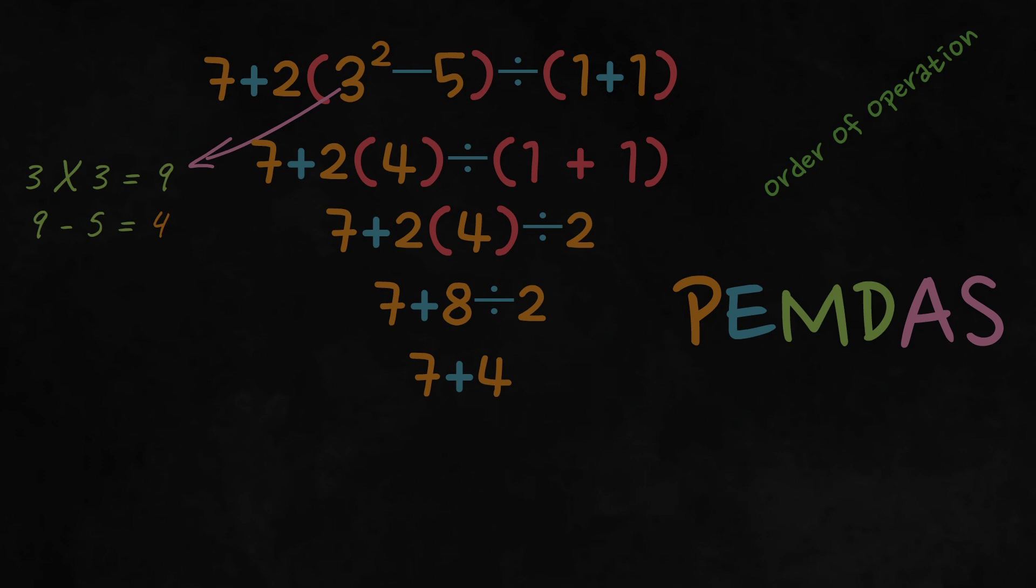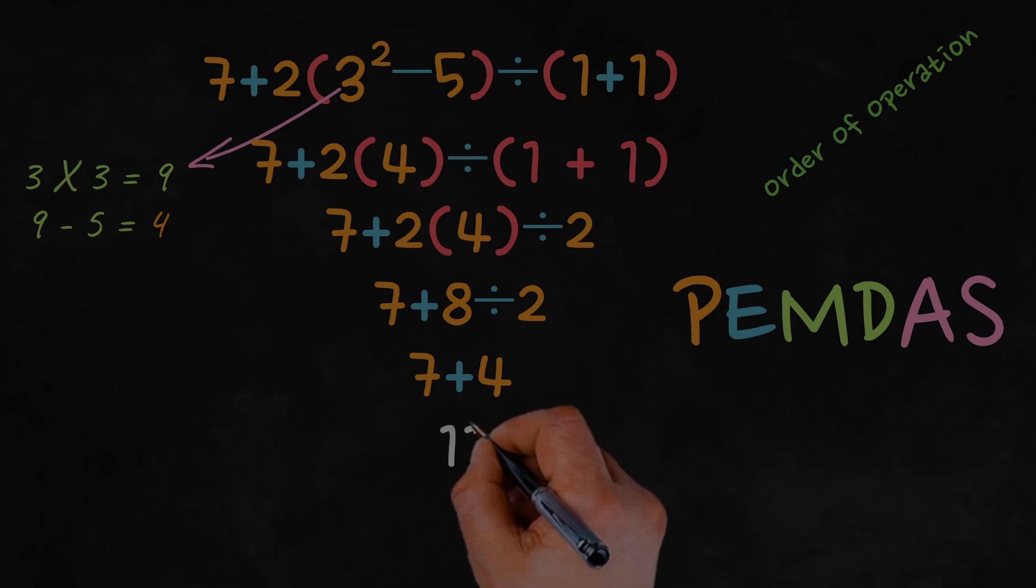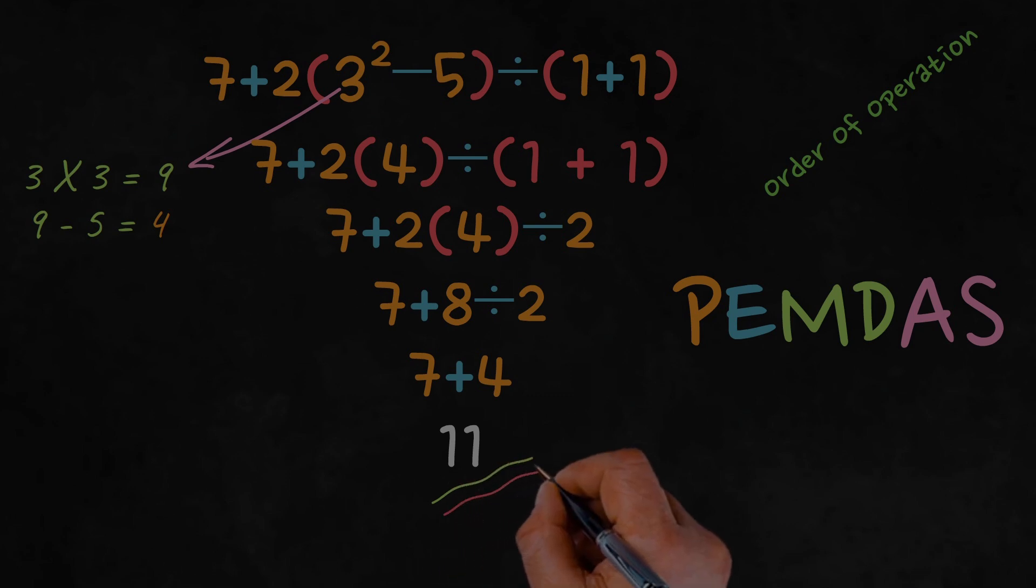Finally, we perform the addition, 7 plus 4, which gives us 11. So, the final answer to the expression 7 plus 2 times 3 squared minus 5 in parentheses, divided by 1 plus 1 in parentheses, is 11.